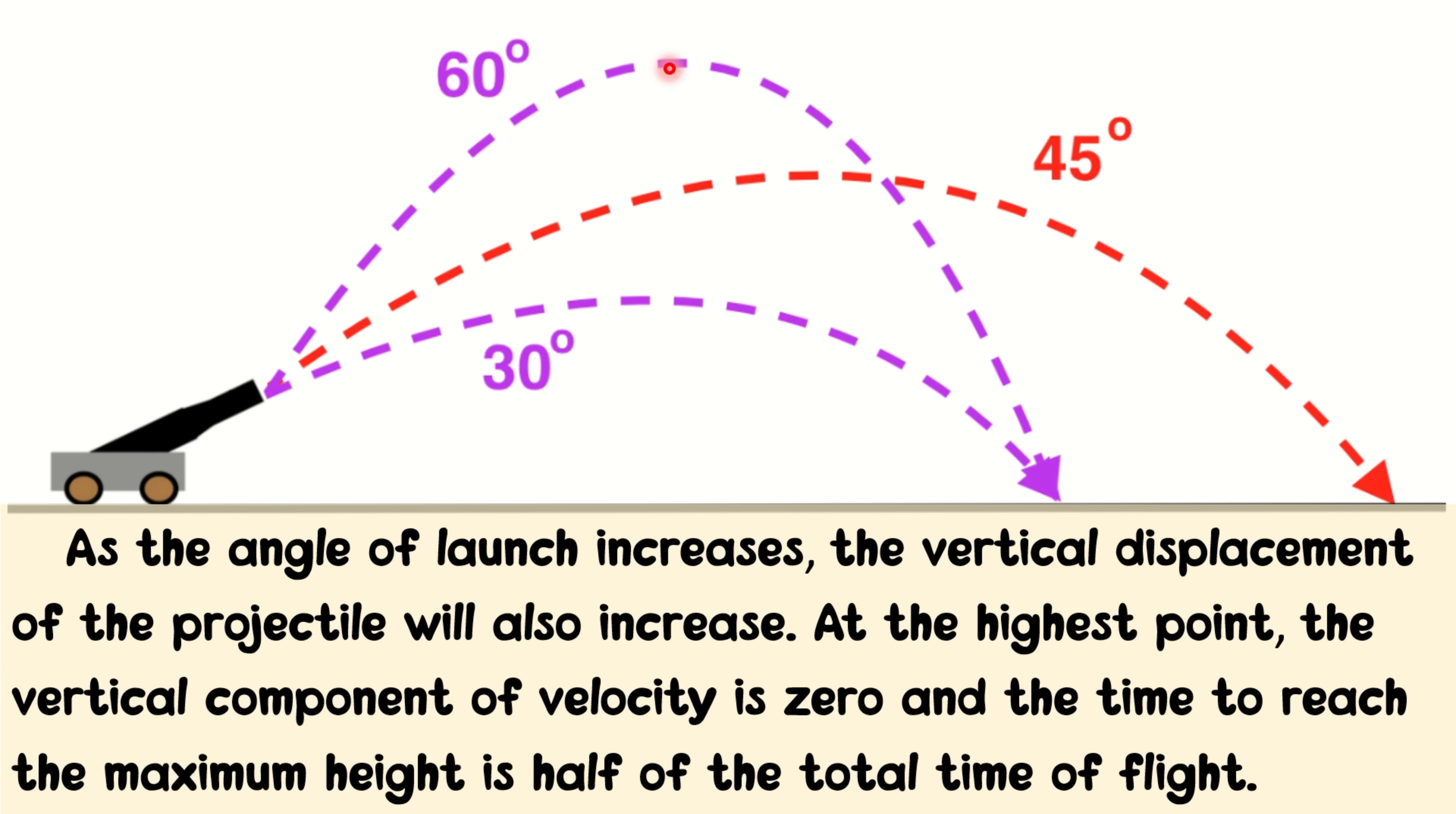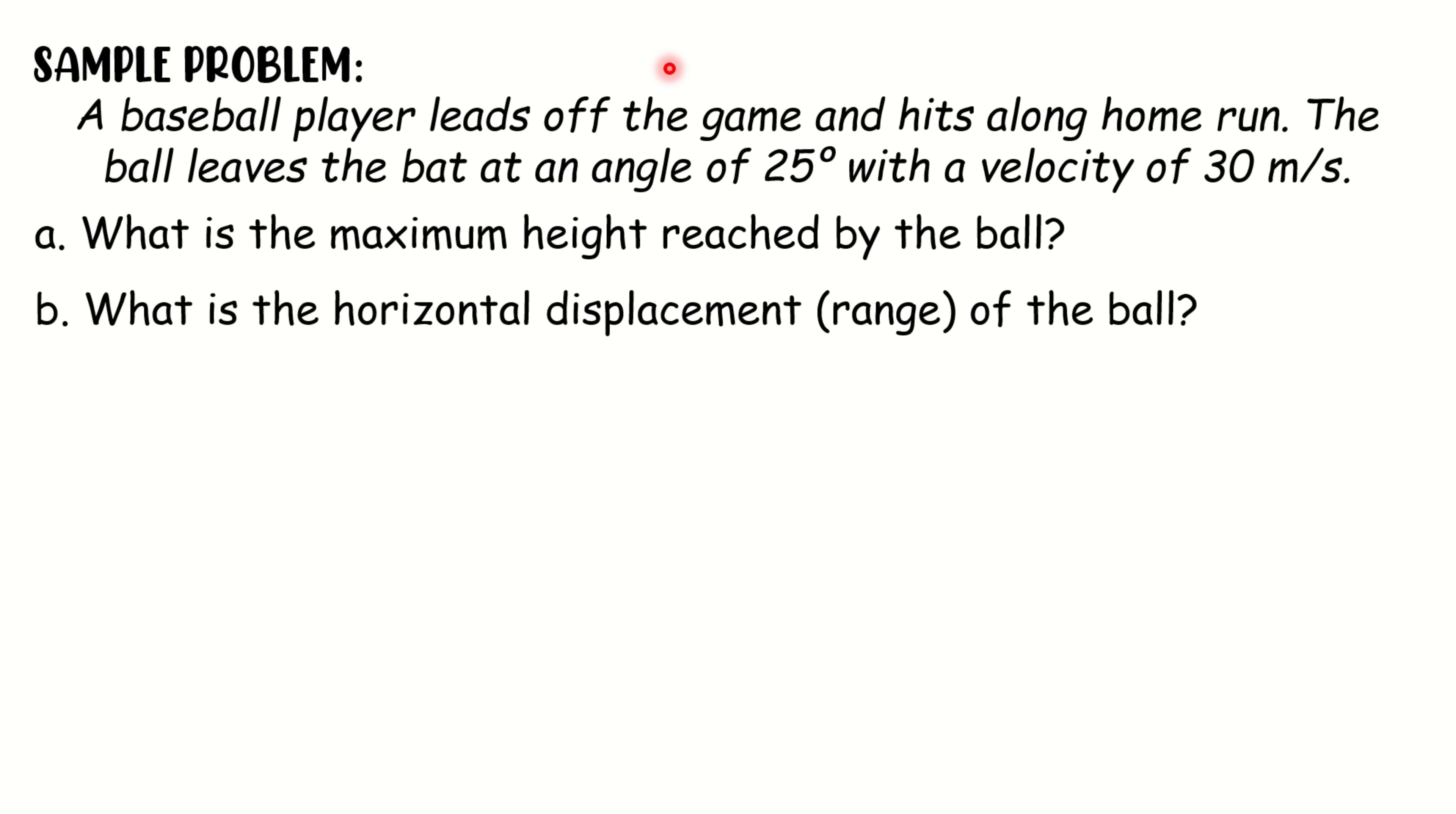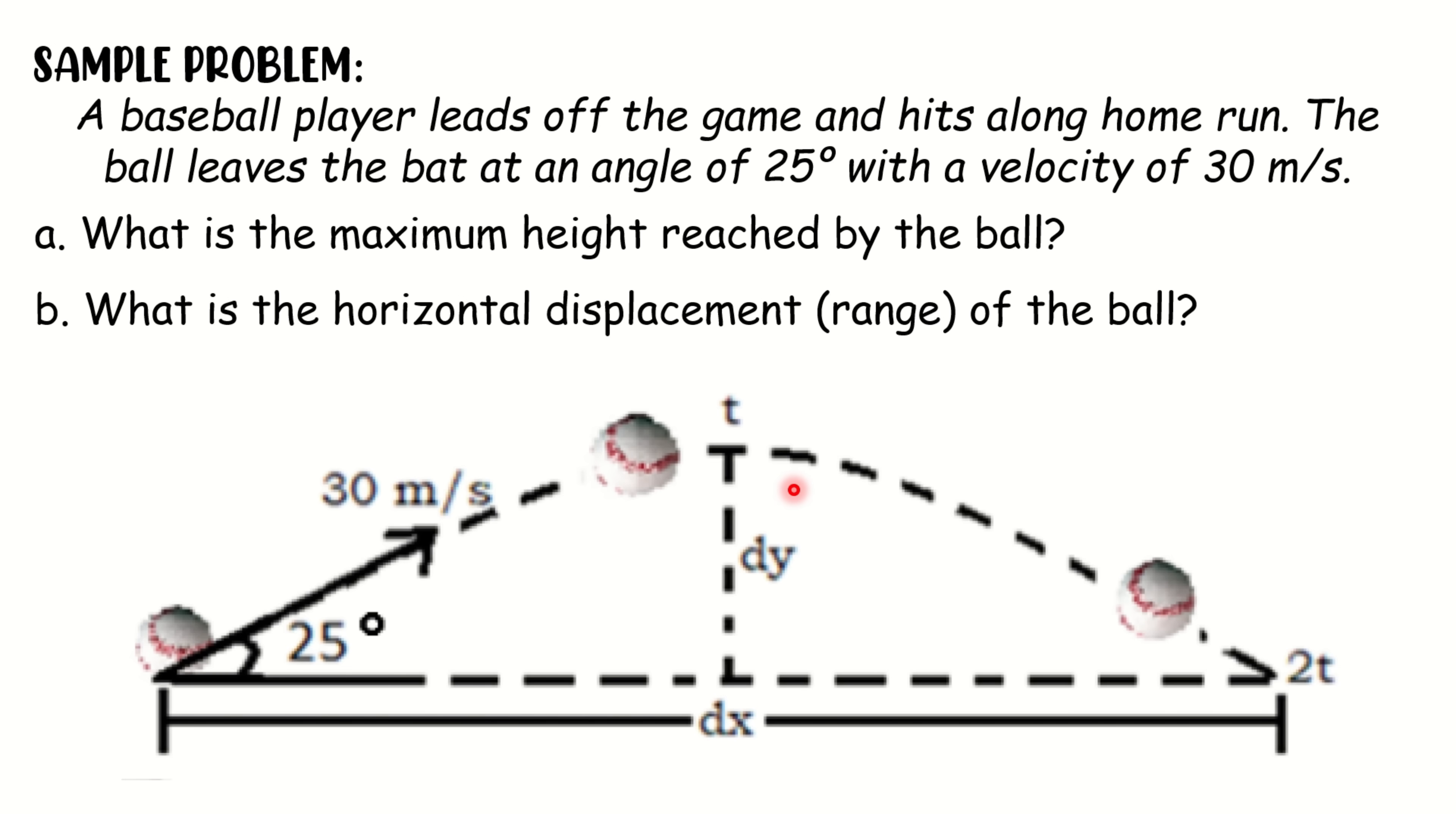Now, let us have an example problem. A baseball player leads off the game and hits a long home run. The ball leaves the bat at an angle of 25 degrees with a velocity of 30 meters per second. Let us find the maximum height reached by the ball and the horizontal displacement of the ball. Let us illustrate the problem. As you can see, we have an angle of 25 degrees and a velocity of 30 meters per second. We are looking for the maximum height reached by the ball and the horizontal displacement or range or dx of the ball. Let us try to solve this problem.